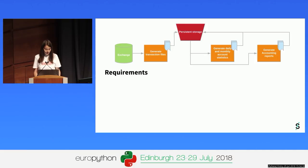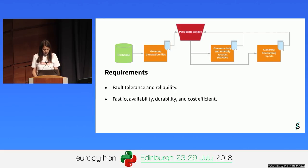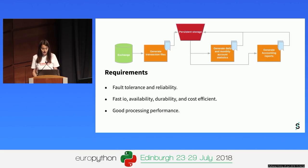The main requirements of the pipeline are fault tolerance and reliability. If something goes wrong, we need to be aware of it and fix it quickly by running those steps of the pipeline that are affected. In terms of storage, we need fast reads and writes, high availability, high durability, and cheap storage. We also need good processing performance — it shouldn't take more than a couple of hours to generate the reports. And finally, we need the pipeline to be scalable, since the number of transactions continues to grow.